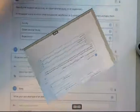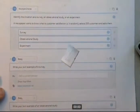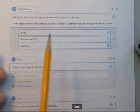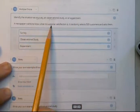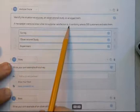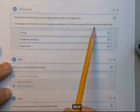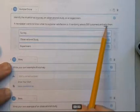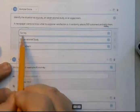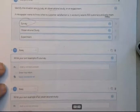So we are onto number 10. Let me bring it down a little here. Number 10. So again, they want to know survey, observational or experiment. A newspaper wants to know what its customer satisfaction is. It randomly selects 500 customers and asks them. So asks them, they could have put the word surveys them there. So that would be a survey.